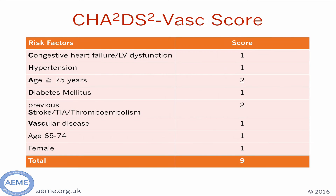The CHA2DS2-VASc score is a risk stratification tool for patients in atrial fibrillation. It is easily found online and is included in the NICE guidelines. Using our patient as an example, he scores one point for hypertension, two points for his age, and one point for diabetes. This equates to a CHA2DS2-VASc score of four, which carries with it a four percent chance of having a stroke in one year. The score will become relevant later when we talk about the NICE guidelines.